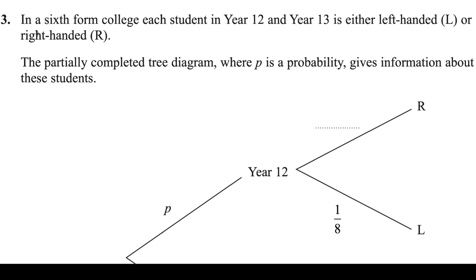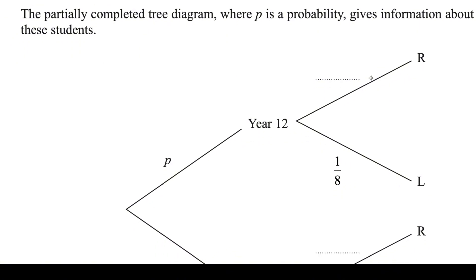In a sixth form college, each student in Year 12 and Year 13 is either left-handed or right-handed. The partially completed tree diagram, where P is the probability, gives information about these students. P is the probability for Year 12 students.